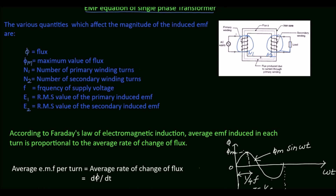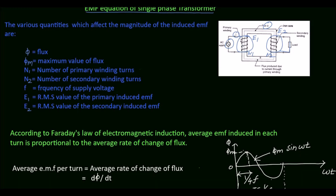When the primary winding is excited by an alternating voltage, it circulates alternating current. That alternating current in turn produces an alternating flux φ. This alternating flux links with the primary winding itself and induces an EMF called E1. The flux also links with the secondary winding through the common magnetic core and induces an EMF called E2. This induced EMF is called mutually induced EMF. Now we will derive the EMF equation of a transformer.